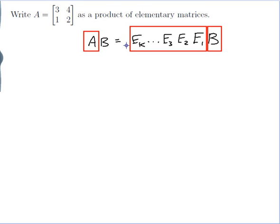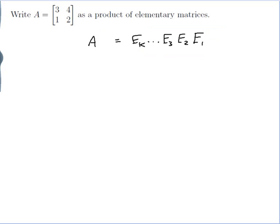This doesn't actually help us figure out what A is as a product of elementary matrices — but actually it does, because if I use B as the identity matrix, I get A·I on one side, which is just A. And on the right-hand side I get all these elementary matrices multiplied by I. So to get A, all I have to do is perform the elementary row operations they represent. This tells me I need to start with the identity and figure out the row operations that will turn the identity into A.